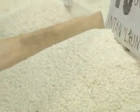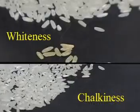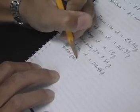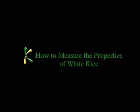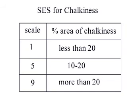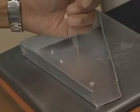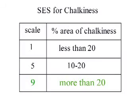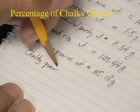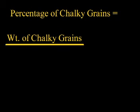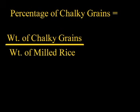In many markets, other quality traits such as chalkiness, whiteness, and grain shape affect the price of white rice. A visual rating of the chalky proportion of the grain based on the standard evaluation system scale is used to measure chalkiness. First select, segregate, and weigh the chalky grains to SES scale 9. Then determine the percentage of chalky grain using the following equation: the weight of chalky grains divided by the weight of milled rice, then multiplied by 100.